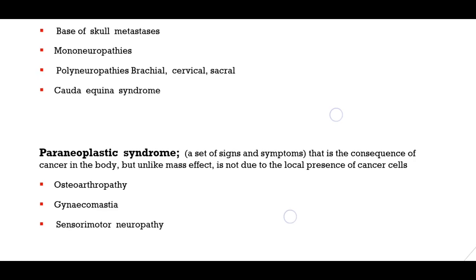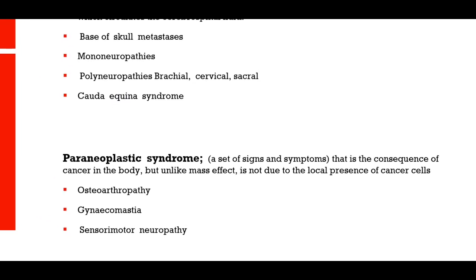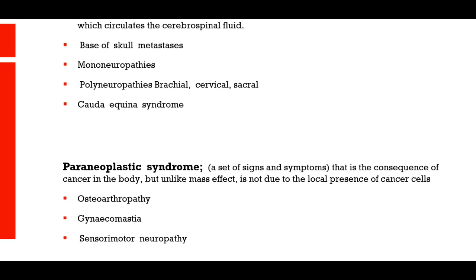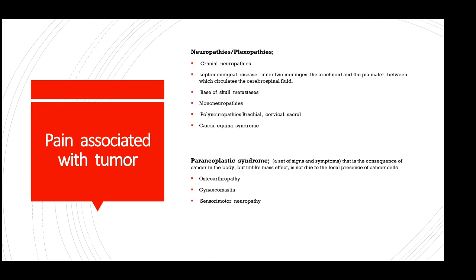There is also a term called paraneoplastic syndrome, which is a set of signs and symptoms that are a consequence of cancer in the body but unlike mass effect, are not due to the local presence of cancer cells. For example, osteoarthropathy can occur in patients with non-small cell lung cancer, gynecomastia can also occur in non-small cell lung cancer or adenocarcinoma type, and sensory-motor neuropathy can occur in small cell lung cancer. Different malignancies can give rise to these paraneoplastic syndrome features in the absence of metastasis.